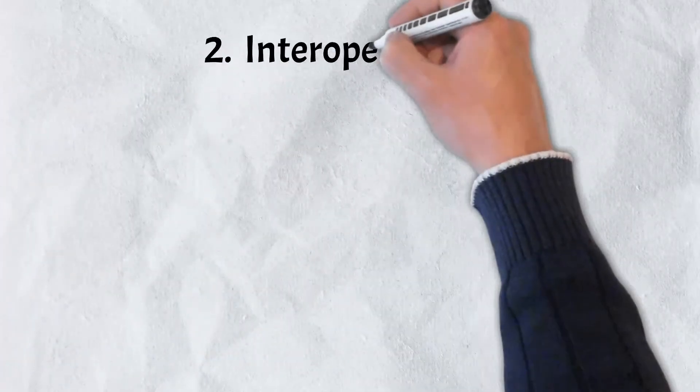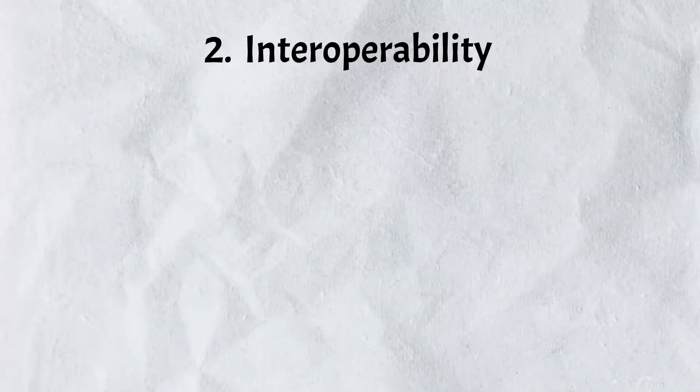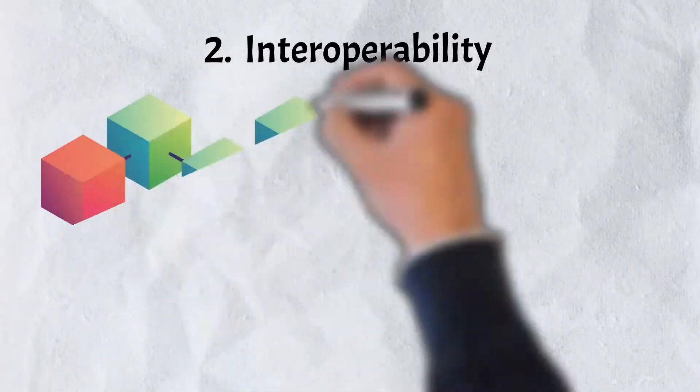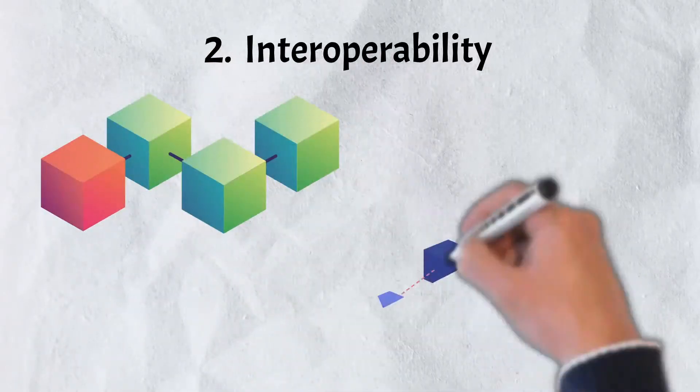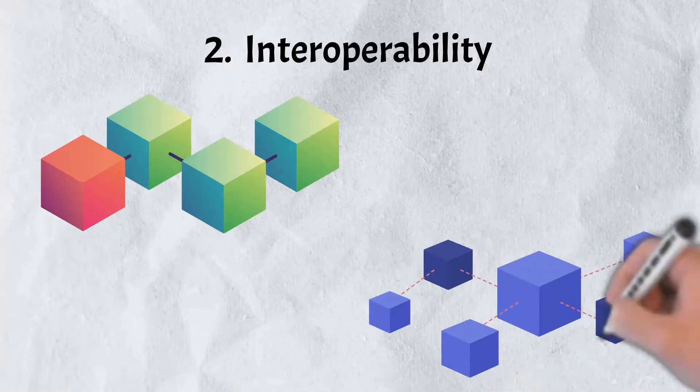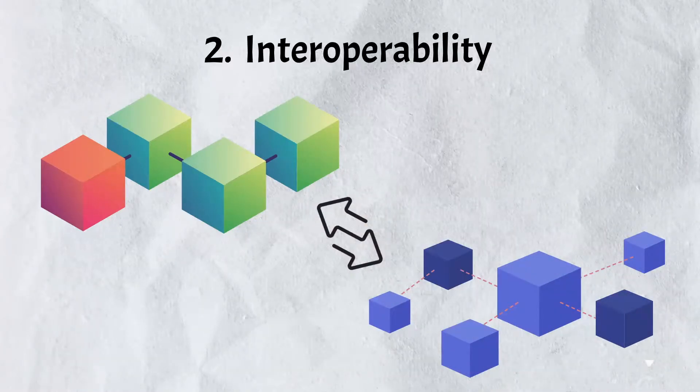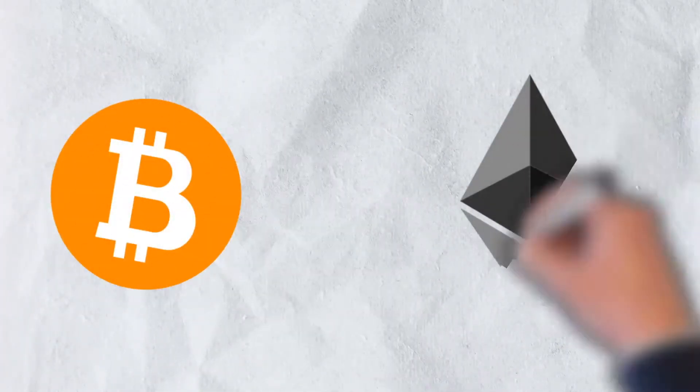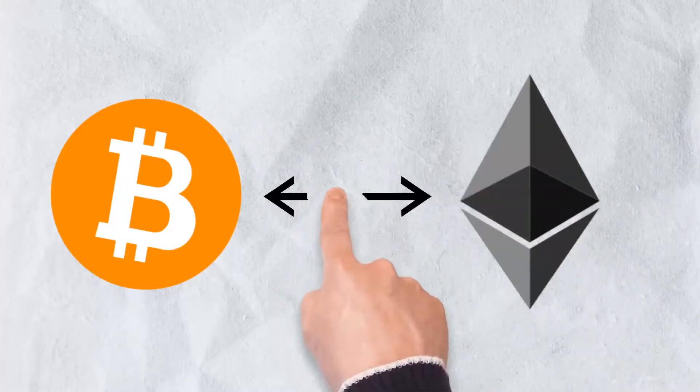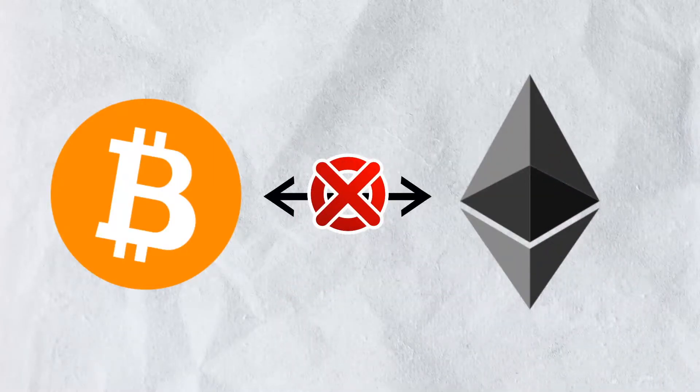The second issue is interoperability. Interoperability is the ability of blockchains to connect with one another and exchange information without restrictions. In today's current environment, blockchains operate independently and do not exchange information with each other. For example, the Bitcoin blockchain has no ability to communicate with the Ethereum blockchain and vice versa.